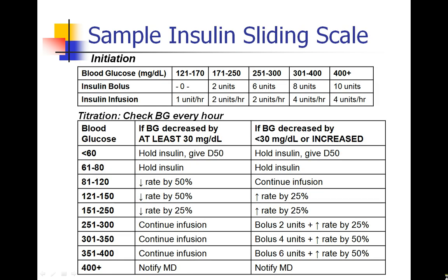Here's an example of a sample insulin sliding scale. It has two phases: initiation and ongoing titration. The initiation takes into account the patient's current blood glucose and prescribes an insulin bolus IV as well as an insulin infusion. After that, blood sugar is checked every hour, and the sliding scale accounts for not only the current blood glucose but also how much it changed since the previous reading. For example, a patient with a blood sugar between 150 and 200 — if their glucose dropped by less than 30 or had increased, we increase the infusion rate; if there was a large drop, we reduce the insulin rate by 25% to keep them from bottoming out.